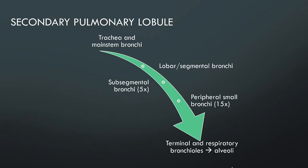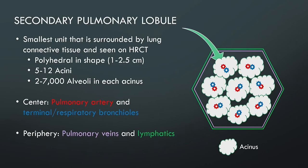To get a sense of scale when looking at a secondary pulmonary lobule: when you take a deep breath, air goes through your trachea and main stem bronchi, through lobar and segmental bronchi, five orders of subsegmental bronchi, 15 orders of peripheral small bronchi, and finally to your terminal and respiratory bronchioles and alveoli. The secondary pulmonary lobule is the smallest unit surrounded by lung connective tissue seen on high-resolution CT. It's polyhedral, about one to two and a half centimeters, containing five to 12 acini, each with about two to 7,000 alveoli. The center contains pulmonary arteries and terminal and respiratory bronchioles; the periphery contains pulmonary veins and lymphatics.